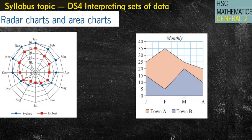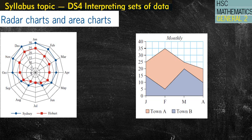You can see here that the two different types of data being compared are different colors, so they're clearly identified. But in an exam it's going to be black and white, so how do they differentiate between the two? For Sydney you've got a little diamond shape, and for Hobart it's a little rectangular shape — so we can still clearly tell which line is which just by those shapes that join the lines together.